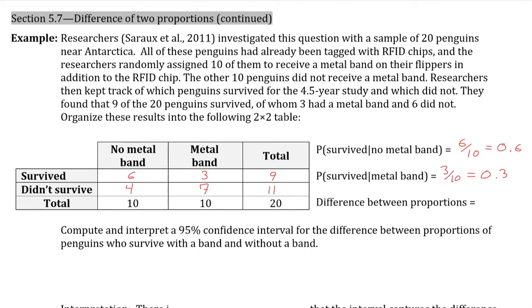Of the 10 individuals with the metal band, we have 3 that survived, so 0.3. And for the difference of the two proportions, 0.6 minus 0.3 gives us 0.3. The fact that it is positive, and I subtracted using the top value, subtracting the second value, since it is positive, that means it is more in favor for those that survived with no metal band, rather than those that survived with a metal band.